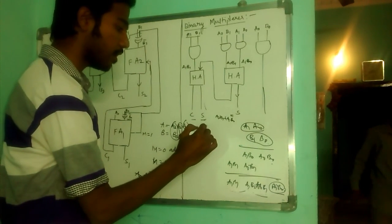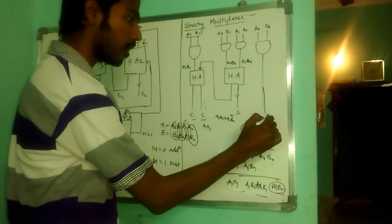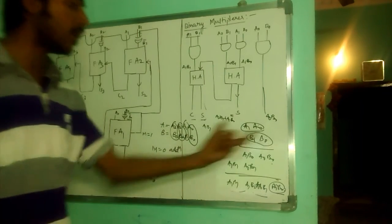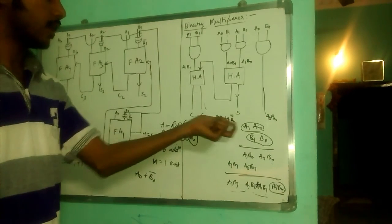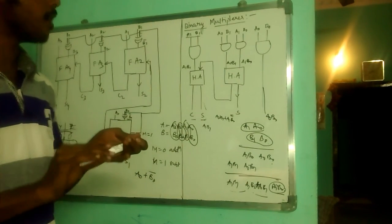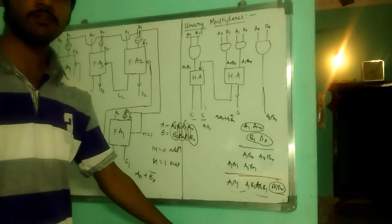This sum, this would be A1 B1. This output will be A0 B0. So, we have obtained a binary multiplier. Binary multiplier terms here. So, this is how binary multiplier works. That's all for this video. Thank you.